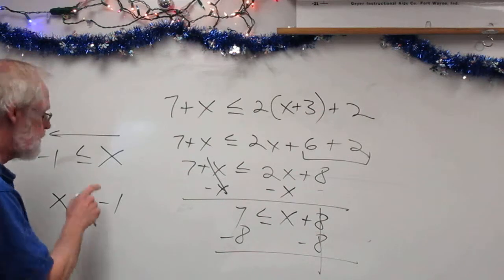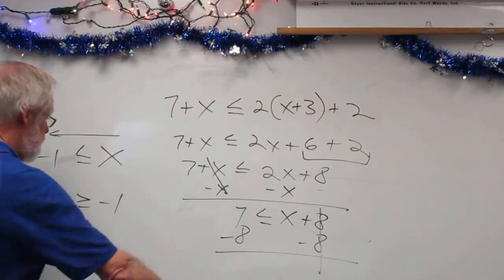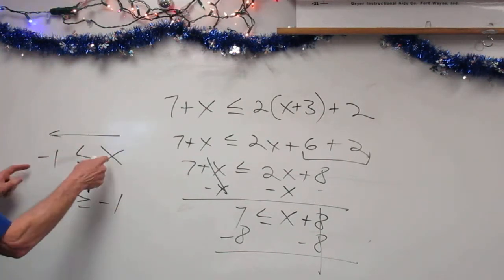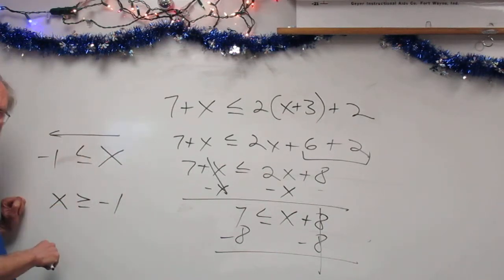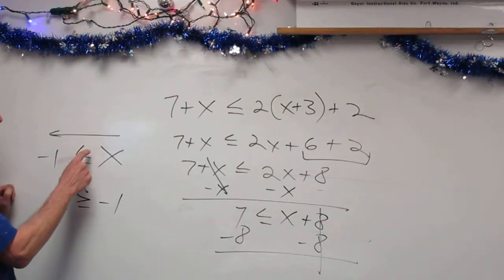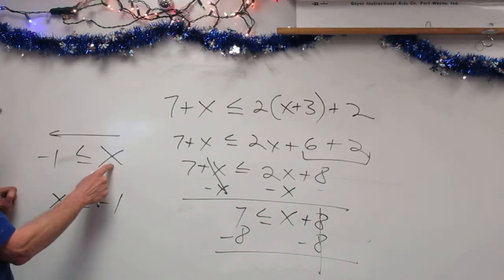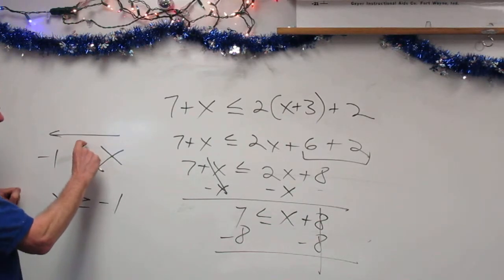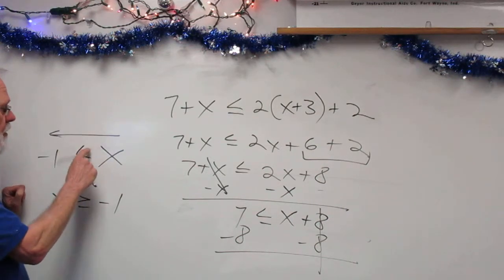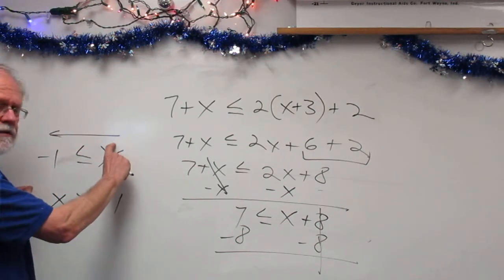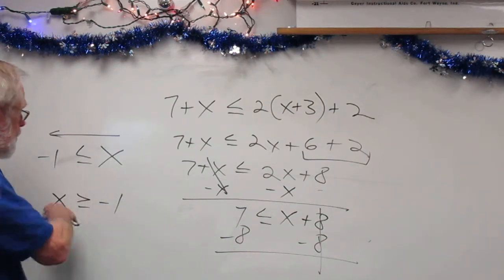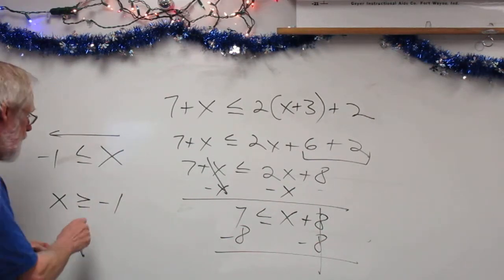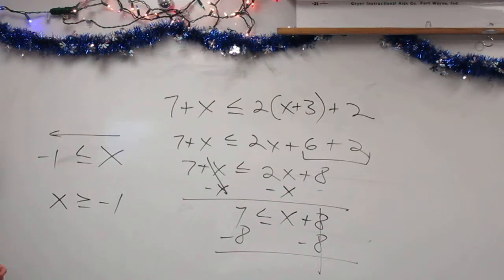You have to be careful: don't just move the x and the negative 1 to opposite sides without moving the sign appropriately. As long as the mouth of the inequality keeps opening toward x, you are simply rewriting it in a more familiar form.